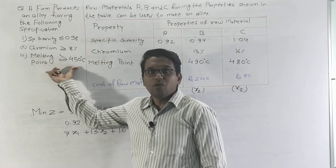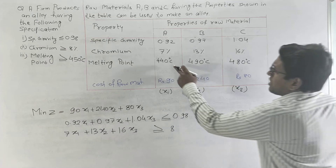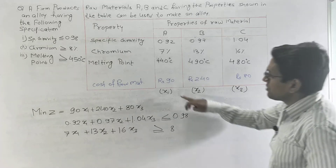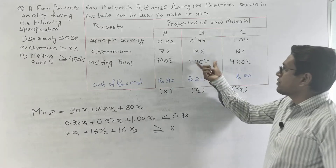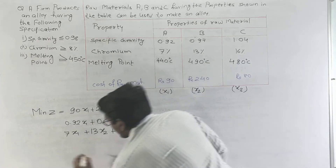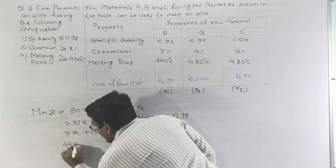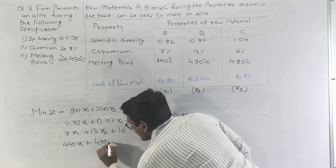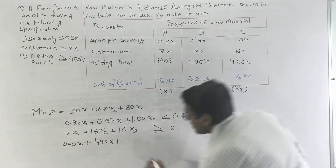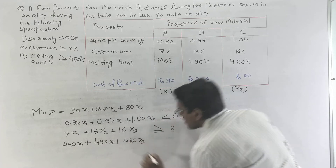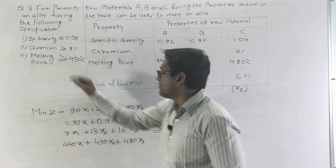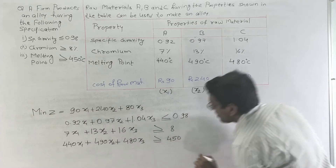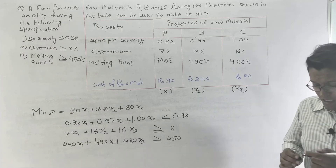The next constraint is that the melting point must be greater than or equal to 450 degrees centigrade. Raw material A has 440, B has 490, and C has 480 degrees centigrade. So x1 contributes 440, x2 contributes 490, and x3 contributes 480. The constraint is: 440x1 + 490x2 + 480x3 ≥ 450.